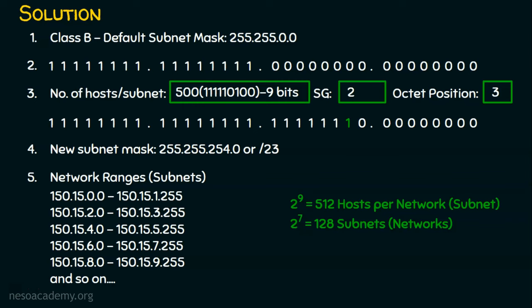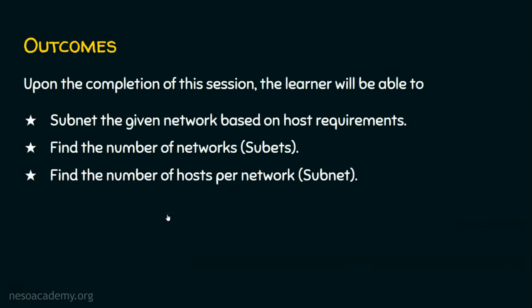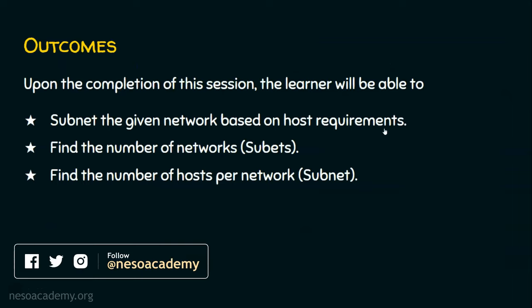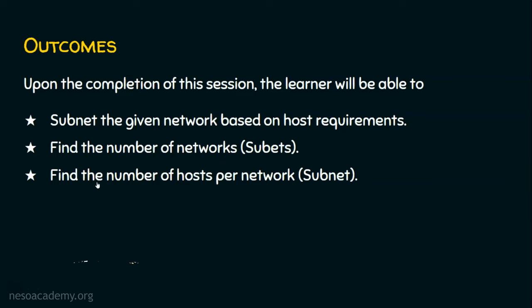Before we conclude, let's see the homework question. The homework question is: what is the network address of the third subnet for this example, and what is the broadcast address of the second subnet? Pause this video, analyze your answer, and post it in the comment section. Now you know how to subnet a given network based on host requirements — in this case a class B example. In the next problem we will take a class A example. The number of networks is 2 power the number of ones, and the number of hosts per network is 2 power the number of zeros. Thank you for watching.